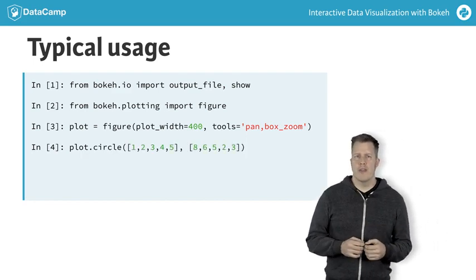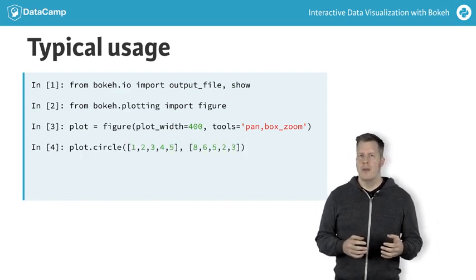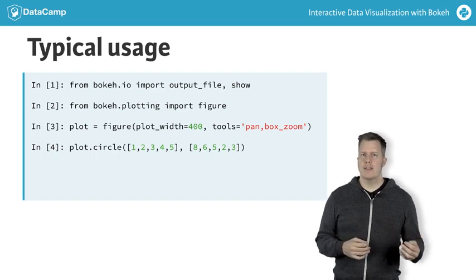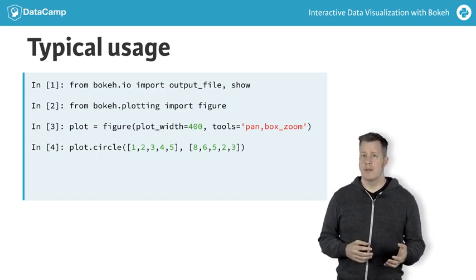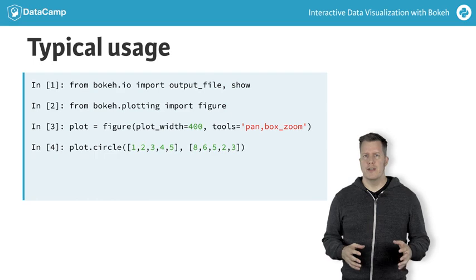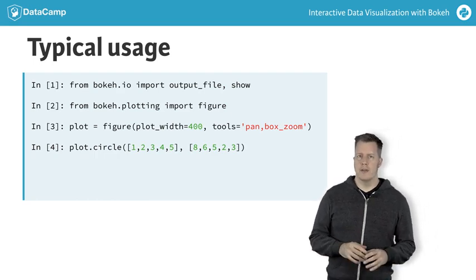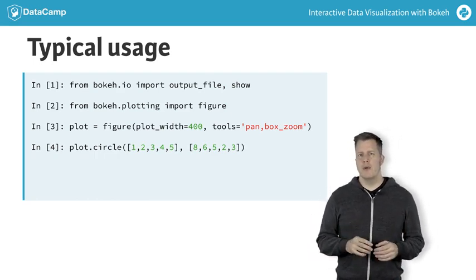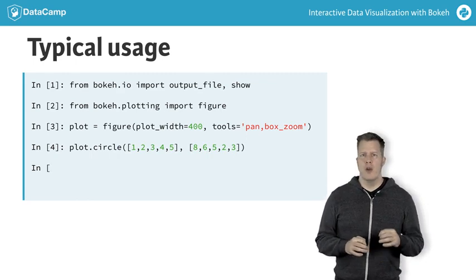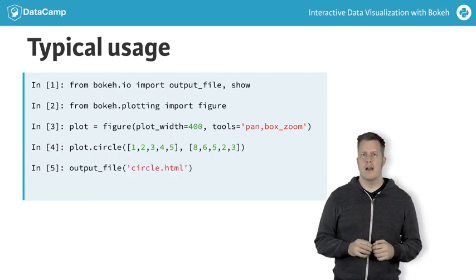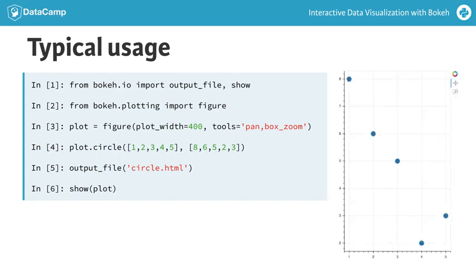We call the dot circle method on the plot returned by figure. In this example, we pass two Python lists that represent the x and y coordinates of the circles respectively. All other visual properties, such as size, color, etc., will take on default values. Finally, we call some functions to display the results. We call output_file to specify that we want to save the output to an HTML file. Then we call show, which saves the file and conveniently opens a browser to display it.